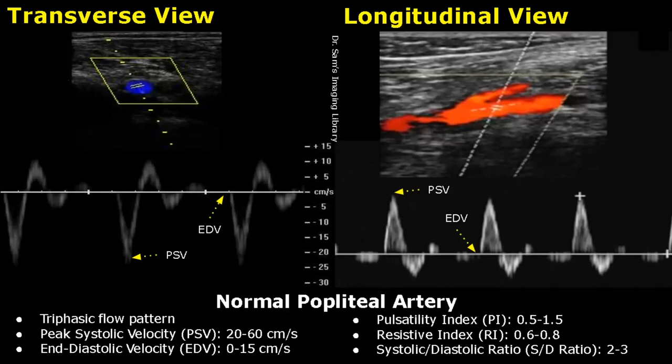The pulsatility index is between 0.5 to 1.5, the resistive index is between 0.6 to 0.8, and the S/D ratio is between 2 and 3.2.